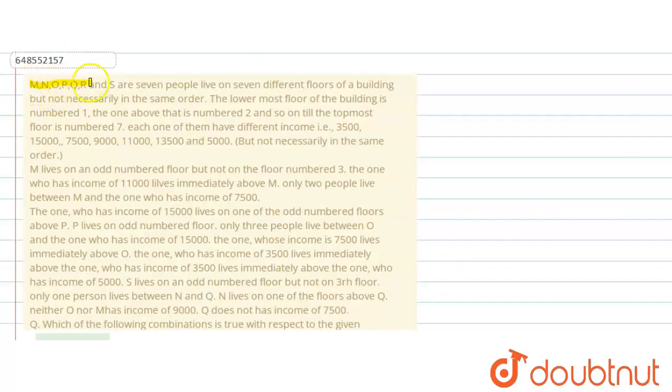The question says M, N, O, P, Q, R, S are seven people living on seven different floors of a building, but not necessarily in same order. The lowermost floor of a building is number one, and the one above that is number two and so on.